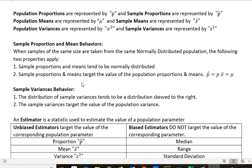Sample variance behavior: The distribution of sample variances tends to be distributed skewed to the right, and the sample variances target the value of the population variance. So the variances are the same, and proportions are the same, and means are the same.